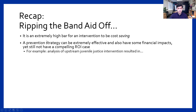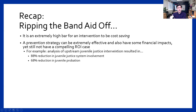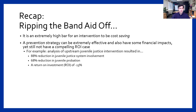Here's an example from an analysis I did recently — from a county that is not here in Idaho, but I won't name any names. They do an upstream juvenile justice intervention. We got awesome data and did a really nice analysis. As a researcher, I was really proud of this. They found an 88% reduction in juvenile justice system involvement and a 68% reduction in probation. Home run type stuff.